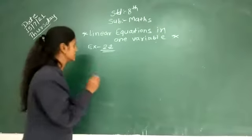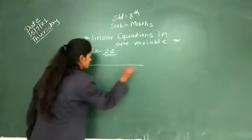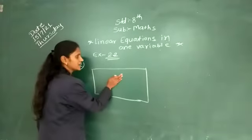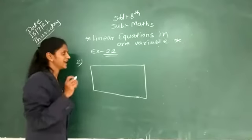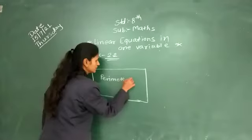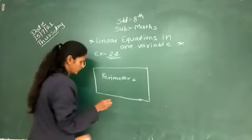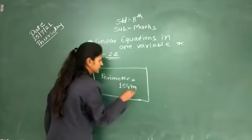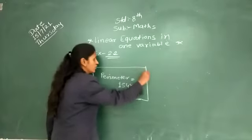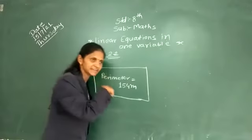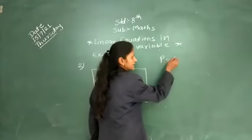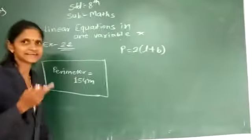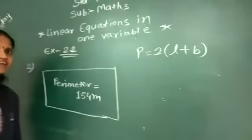We have to draw one rectangular swimming pool. It is our rectangular swimming pool. And they have given the perimeter of that swimming pool is equal to 154 meters. So perimeter is equal to 154 meters. Perimeter means we know it is the addition of all sides. Because it is a rectangle, we write: perimeter of rectangle equals 2 times (length plus breadth). That is the formula for the perimeter of a rectangle, because our swimming pool is a rectangular shape.